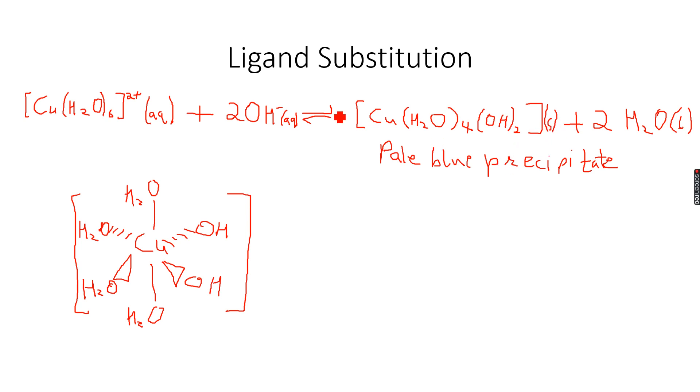It's a solid and it's not an ion, so it cannot be soluble. Because it's not an ion, it cannot be soluble, so it is a solid. It's a pale blue precipitate. We will see why we get this color later when we learn about colors later in this presentation.